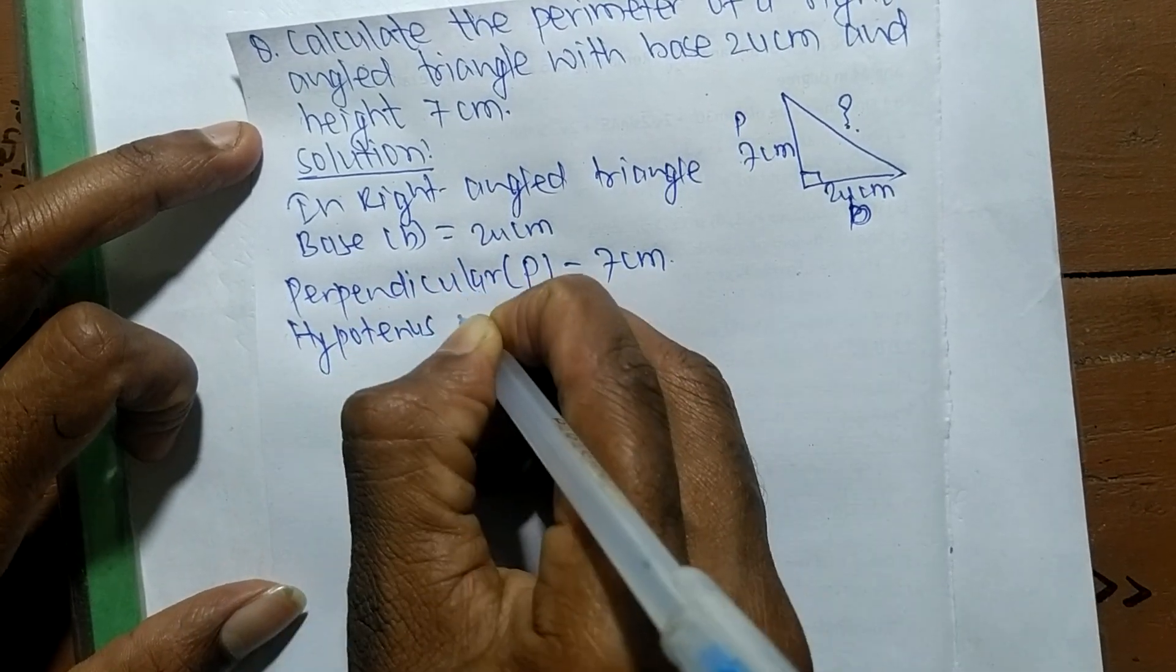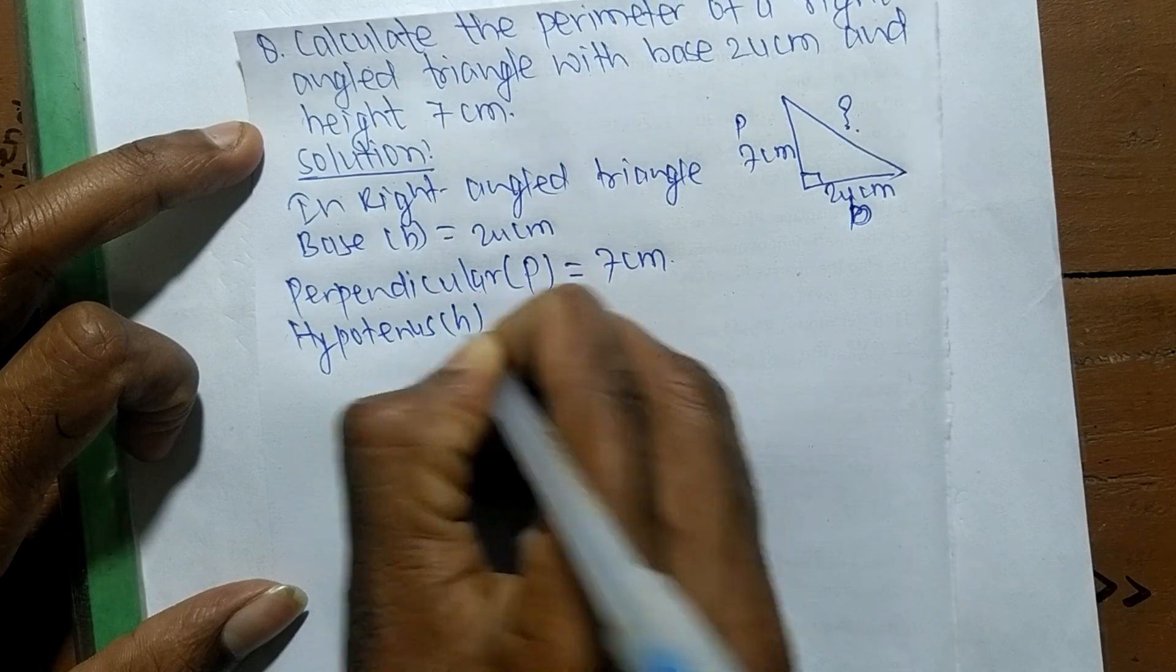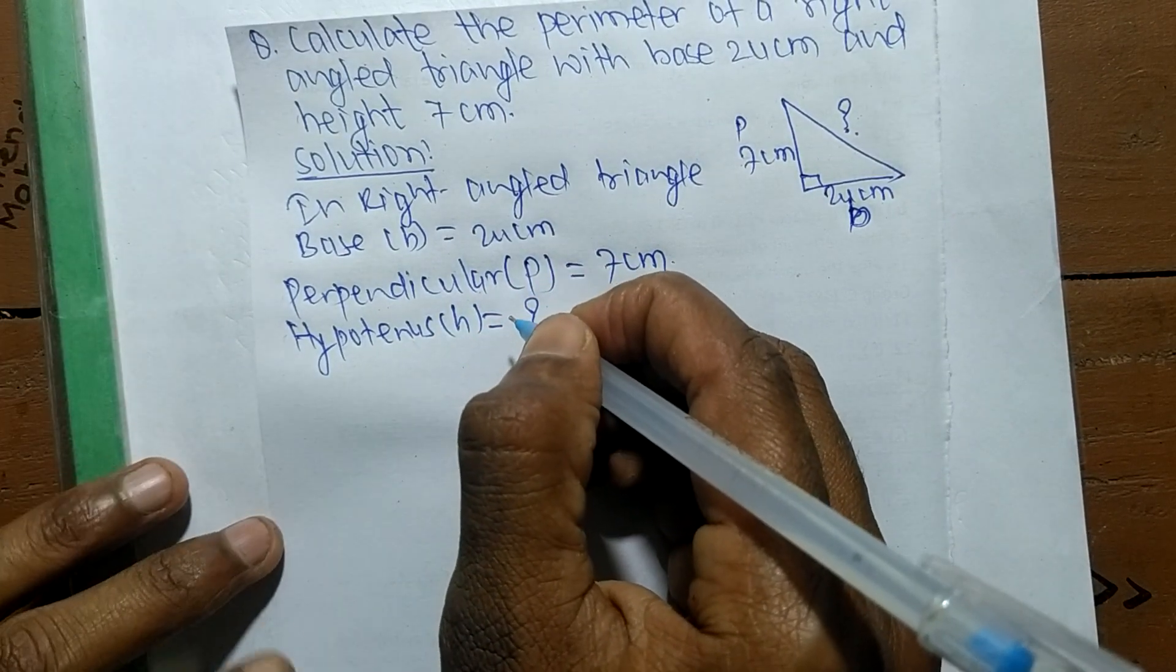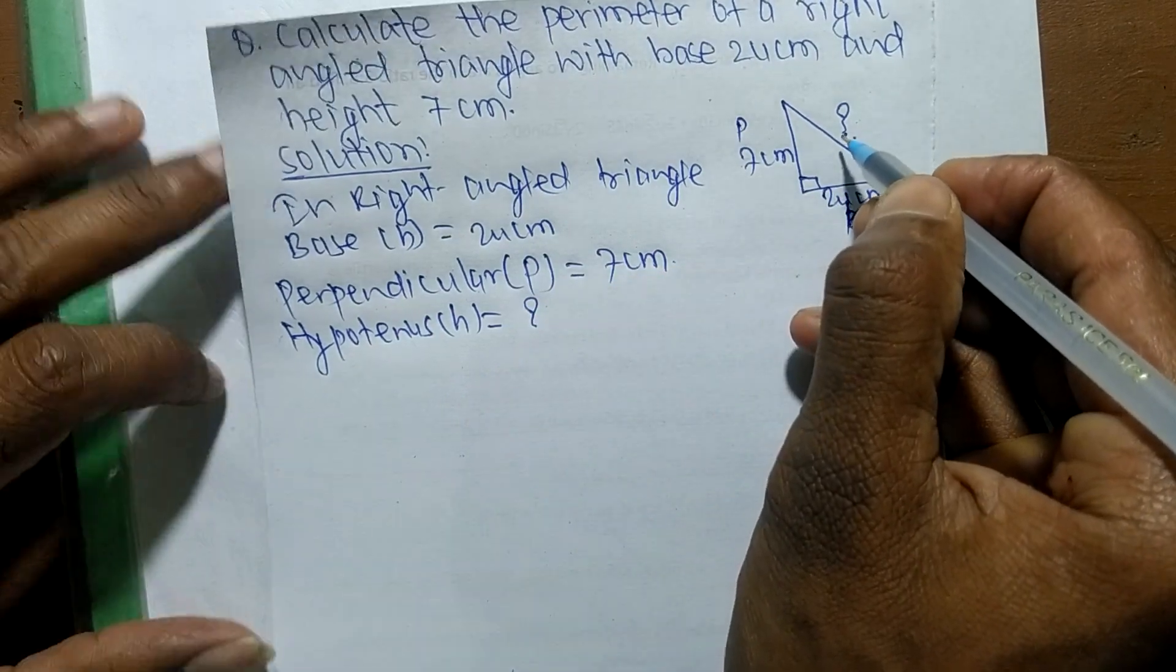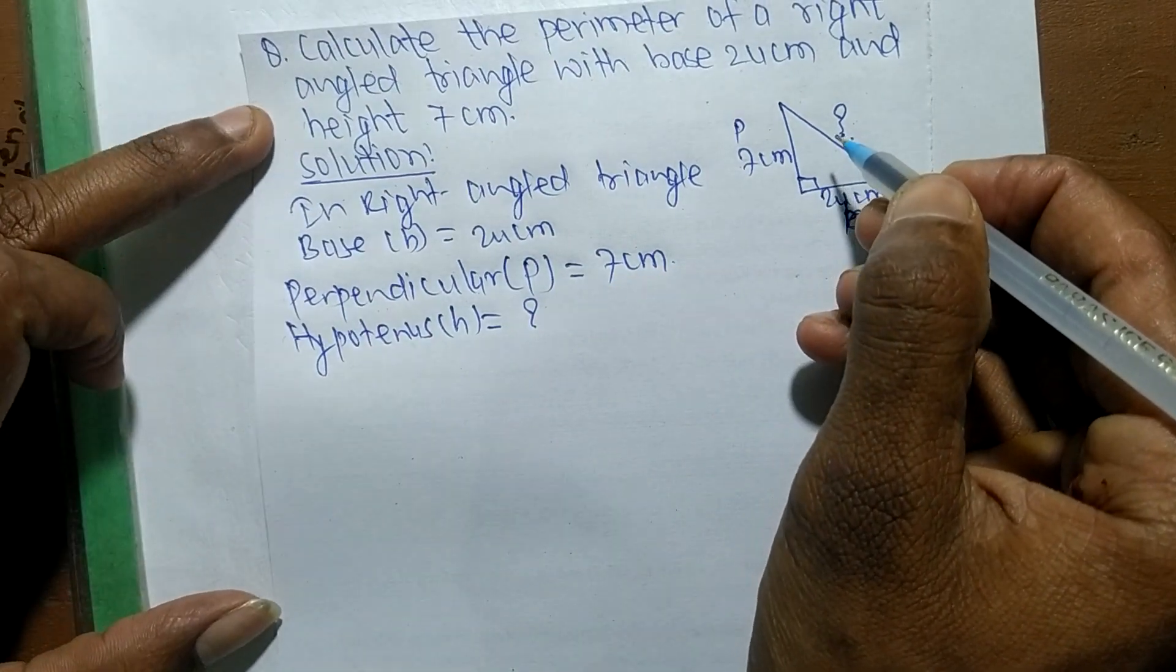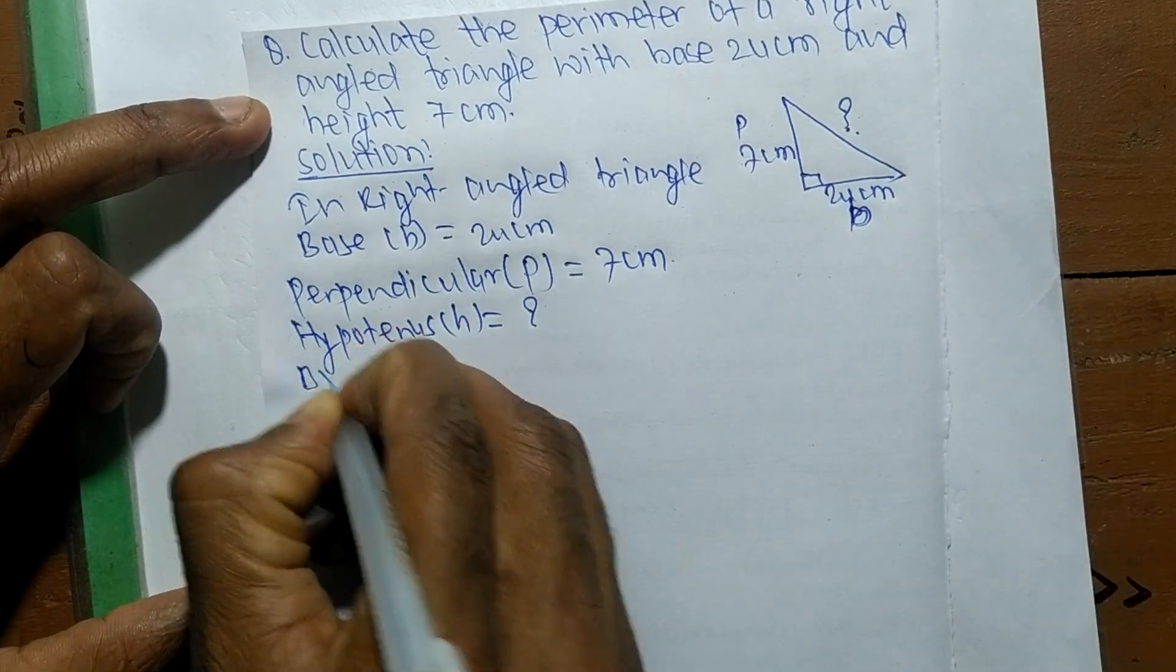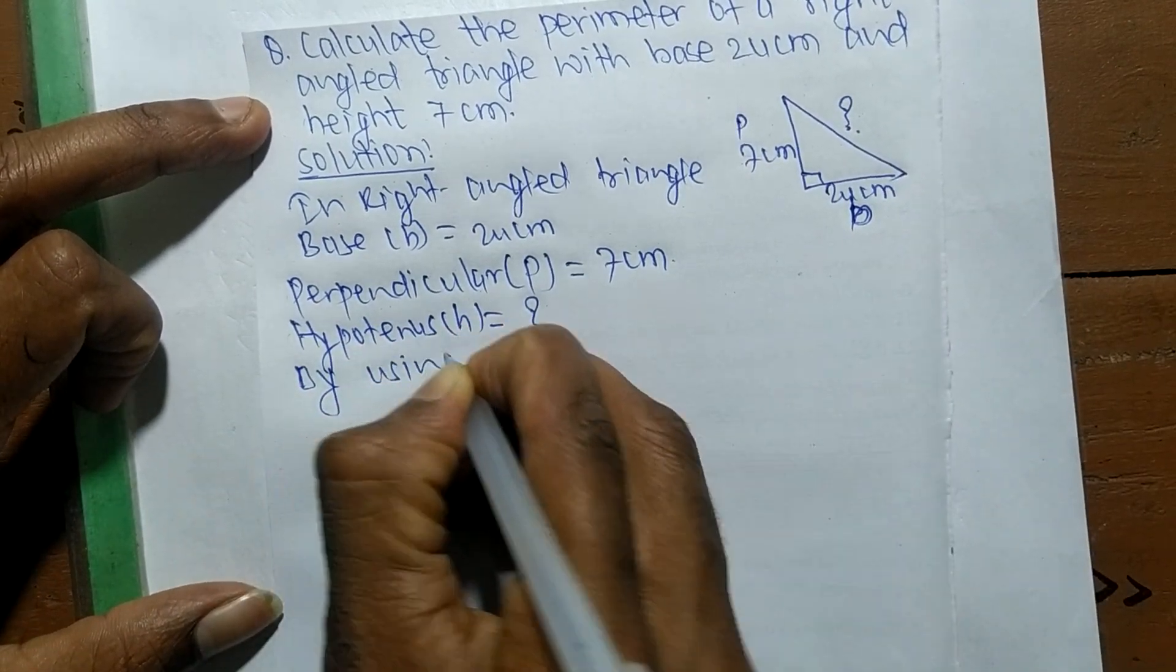We represent the hypotenuse by H, which is equal to what? First of all, we have to determine the remaining side, which is the hypotenuse. After that, we have to determine its perimeter.